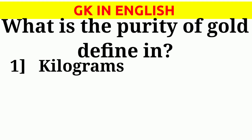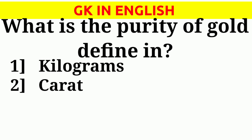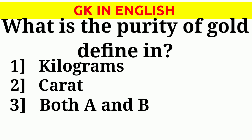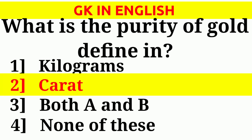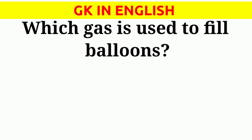What is the purity of gold defined in? One: Kilograms. Two: Carat. Three: Both A and B. Four: None of these. Correct answer is two — Carat.